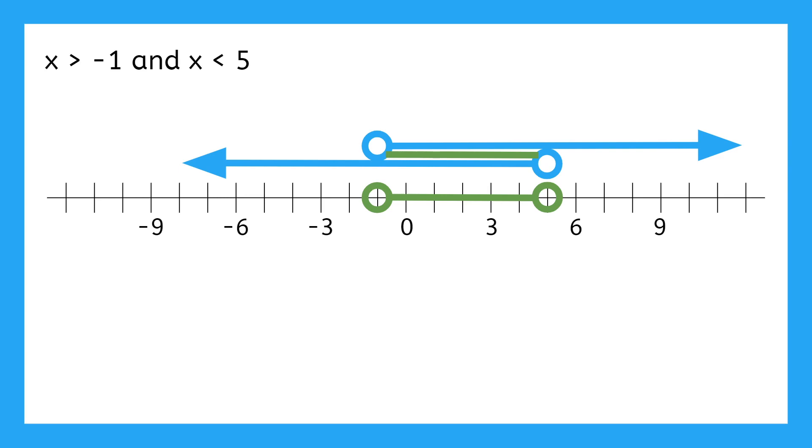So now we know that any number between negative 1 and 5 could work. That doesn't just mean whole numbers either. 3.7 is within that range, as is 2.1, or negative 0.5.